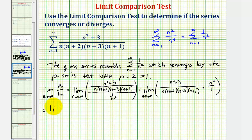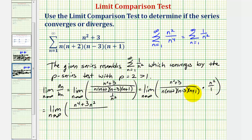So now we have the limit as n approaches infinity of the numerator, which would be n to the fourth plus three n squared. For the denominator, if we multiply it out, the highest degree term would be n to the fourth. This is really all we need to find this limit. Because the degree of the numerator and the degree of the denominator are the same, the limit as n approaches infinity is equal to the ratio of the leading coefficients, which would be one divided by one, which equals one.